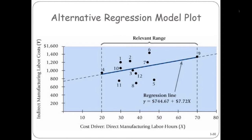Negative 1 just means that as your independent variable increases, your dependent variable will decrease — so when you're in the negative range, it's an inverse relationship; one decreases as the other one increases. When you're in the positive range, as most cost functions will be, they increase together. For cost functions, we're looking at this range. 1 means it's a perfect fit — every point is directly on the line — and that happens best in physics. Zero means there's no relationship at all; you have to draw a line, but it has no predictive ability.